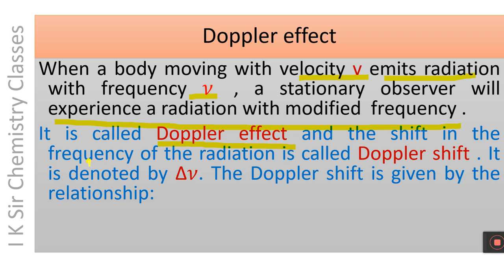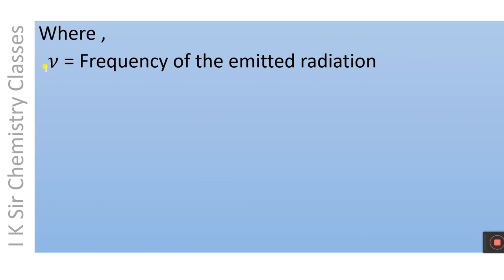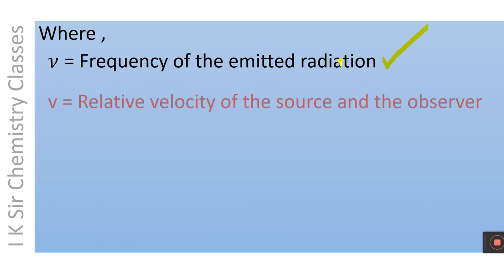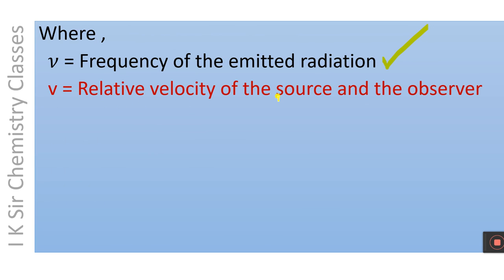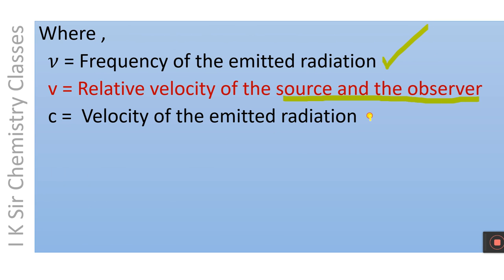The shift in the frequency of the radiation is called the Doppler shift, denoted by Δν. The Doppler shift is given by: Δν = ν × (v/c), where ν is the frequency of the emitted radiation, v is the relative velocity of the source with respect to the observer, and c is the velocity of the emitted radiation.